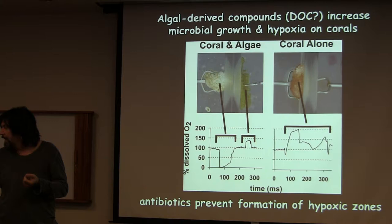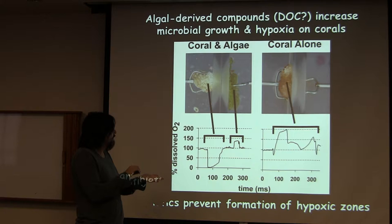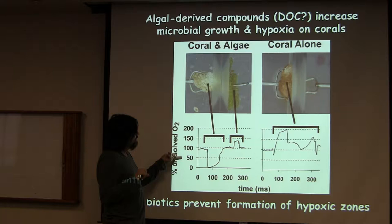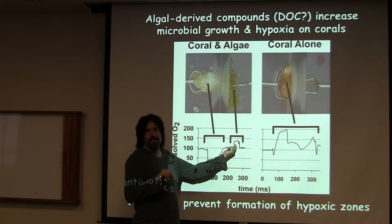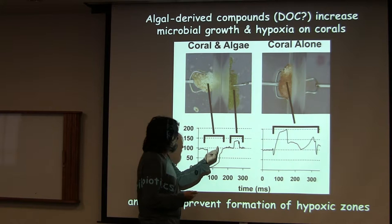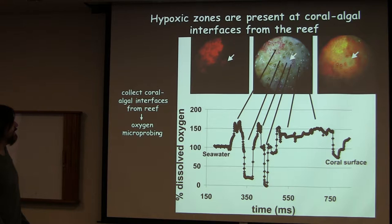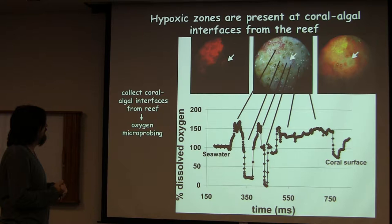This led to all this stuff looking at hypoxic zones. This is oxygen microprobing. If seawater is 100% dissolved oxygen, where there's algae you get superoxic conditions because they're doing photosynthesis and producing oxygen. Same when you've got a healthy coral — it's superoxic, the zooxanthellae are doing photosynthesis. However, where you're at a coral across from algae, it's actually hypoxic. And that's observable all over the world. We see it essentially everywhere we look.